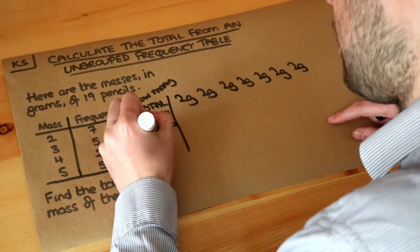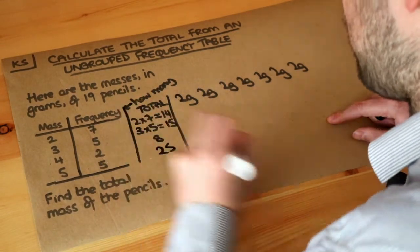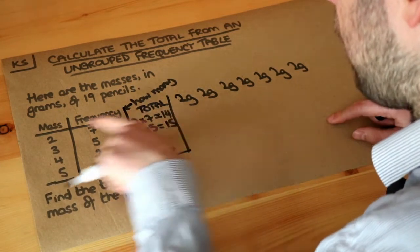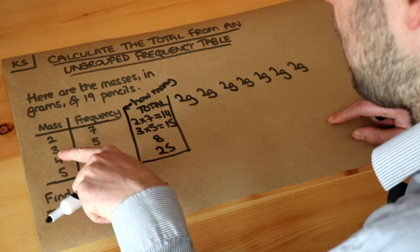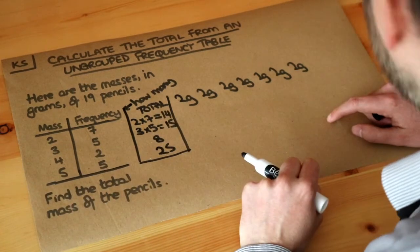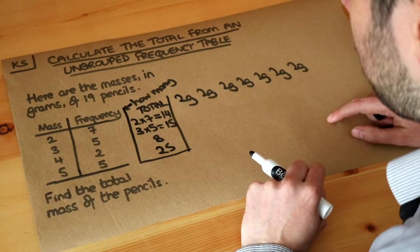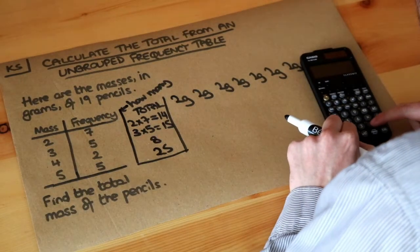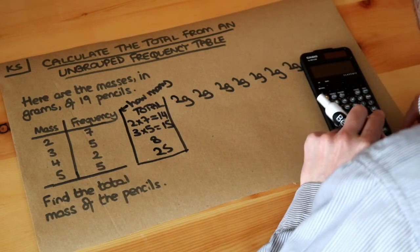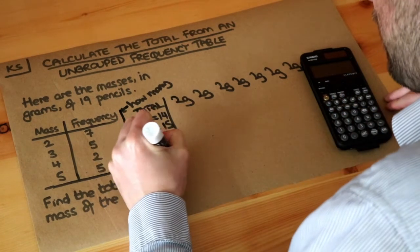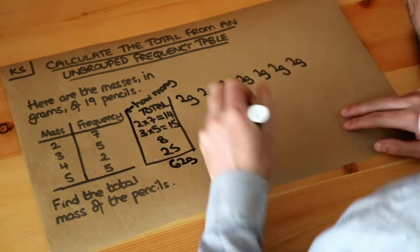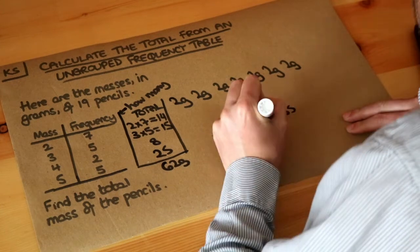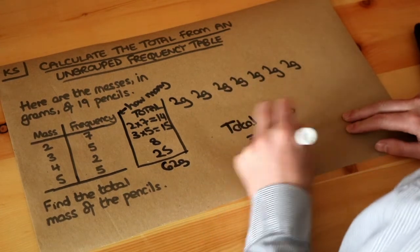Then we do 4 times 2, which is 8, and 5 times 5, that's 25. Now if we've got the total mass of each group of pencils, we just add them all up to get the grand total mass. So 14 plus 15 plus 8 plus 25 — and that's a grand total of 62 grams. Therefore, the total mass of all the pencils is 62 grams, and that's the final answer.